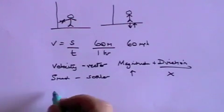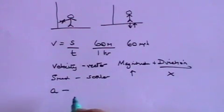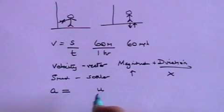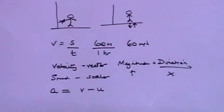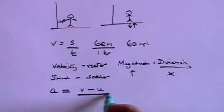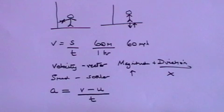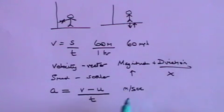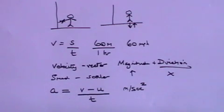We're also going to define acceleration. Acceleration is the rate of change of velocity. So if we start with velocity u and finish with velocity v, then the difference between them is the change in velocity. The rate of change of velocity is v minus u divided by t, the time it takes for that velocity to change. The units are velocity — meters per second — divided by time in seconds, giving meters per second squared.